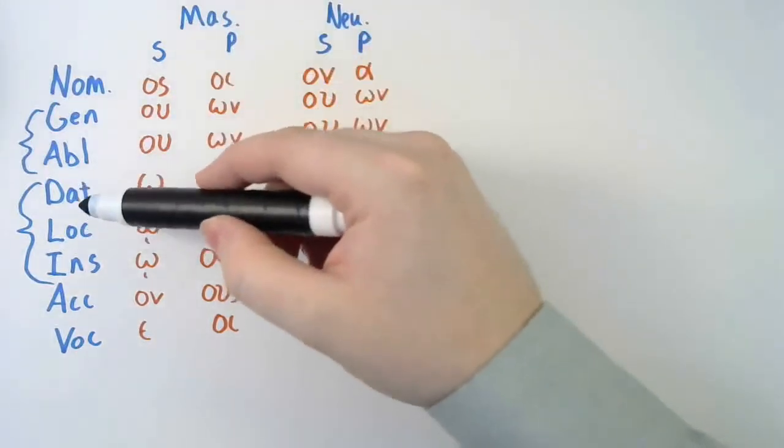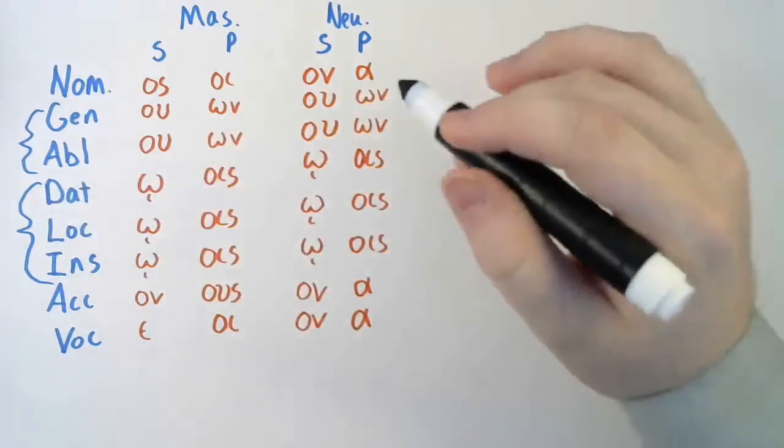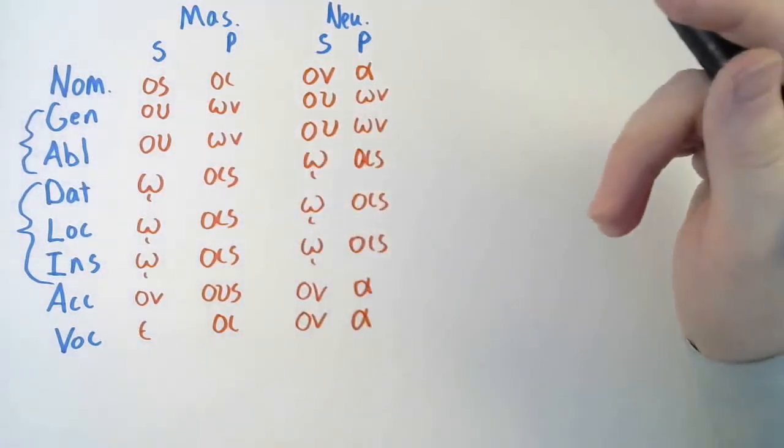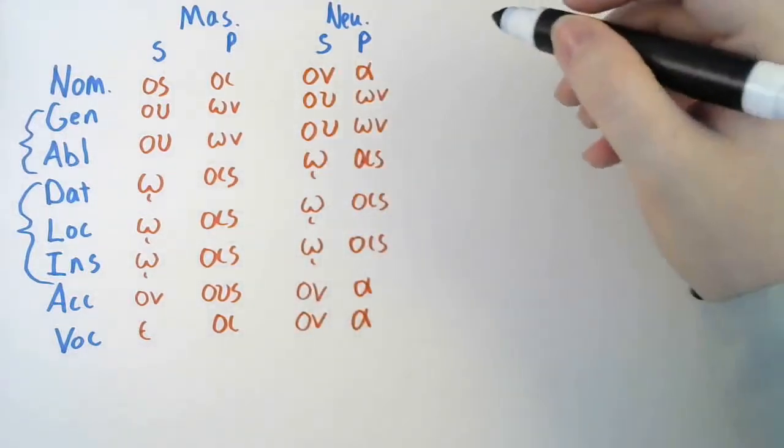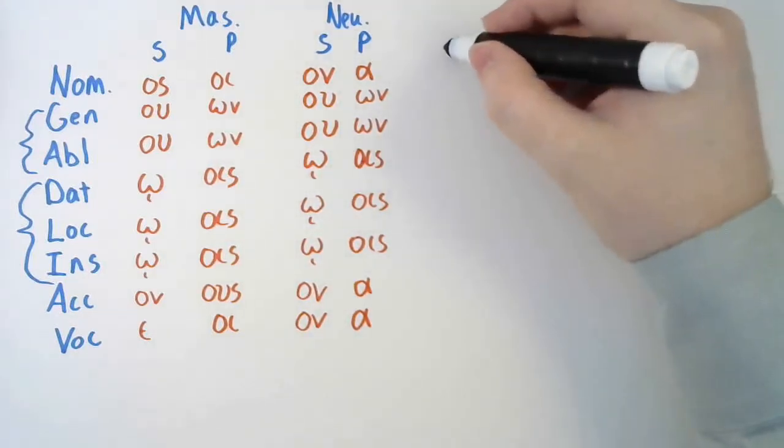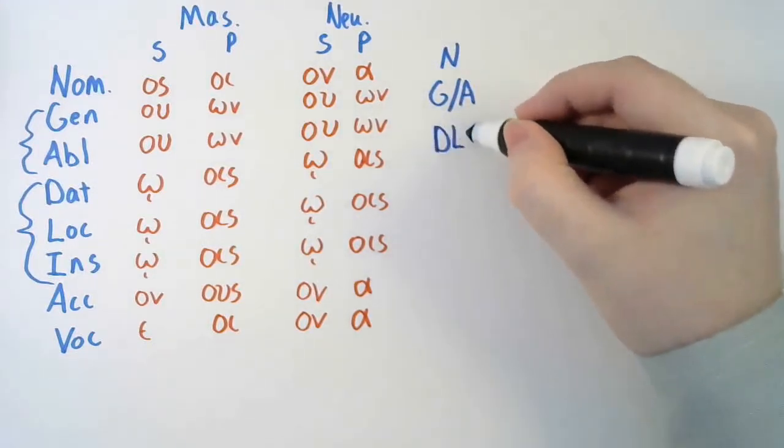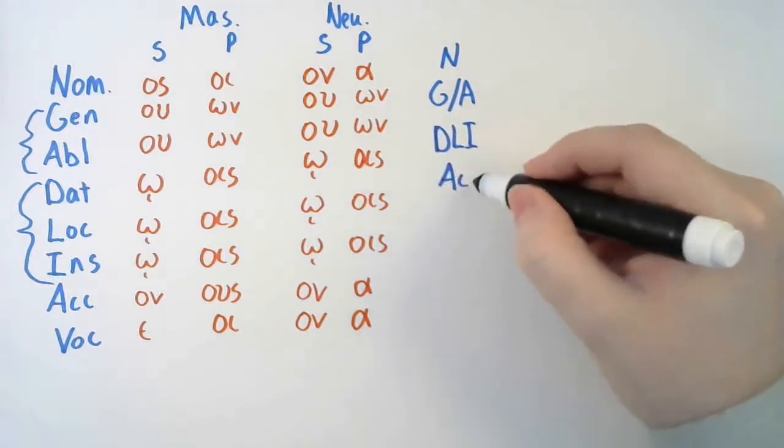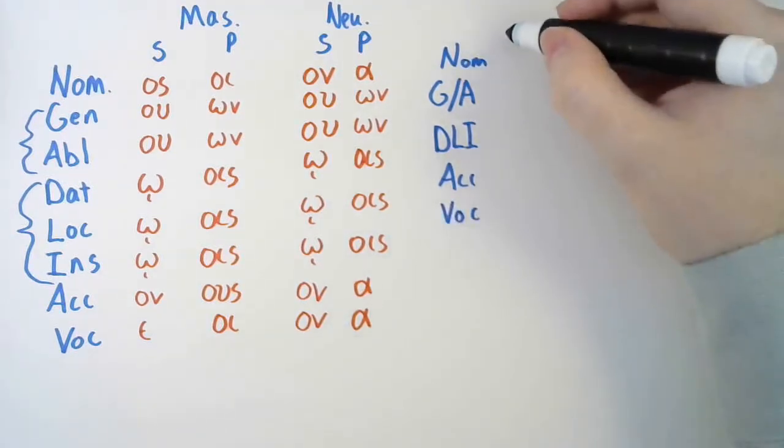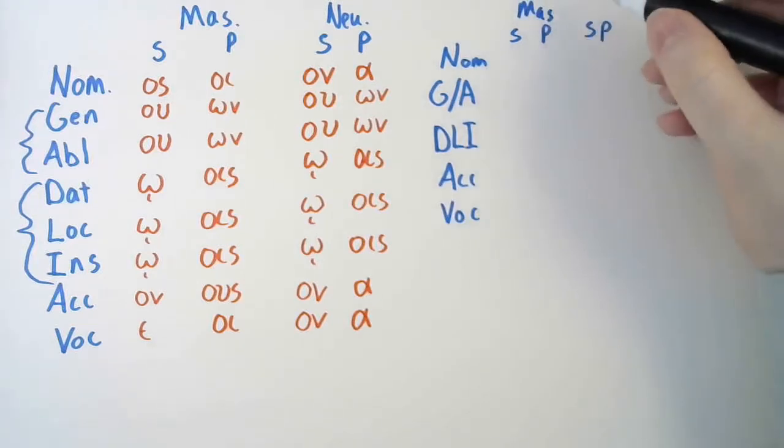Likewise, they group the dative, locative, instrumental all into dative, because they all share the same form. So, if you'd like to, I guess, simplify, this is one reason I kind of like the five-case system a little better, because it doesn't take so long to do the charts. But if you want to do a little quicker, we could do nominative, group genitive and ablative together, dative locative and instrumental, accusative, and vocative, then do your chart like that. Singular, plural, singular, plural, masculine, and neuter.